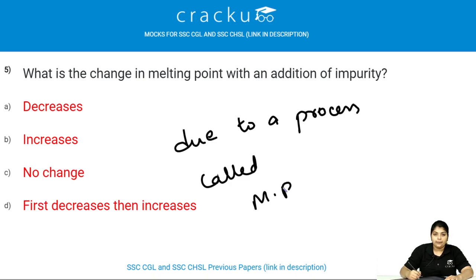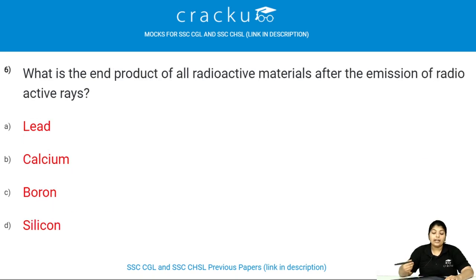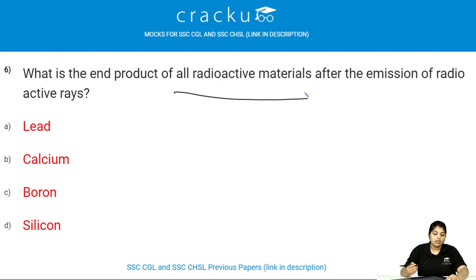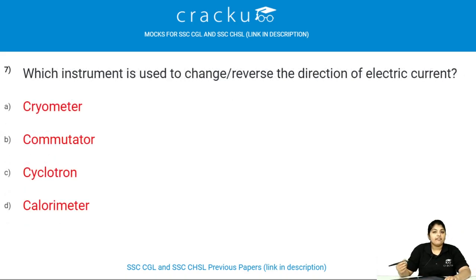What is the end product of all radioactive materials after the emission of radioactive rays? The end product of all radioactive materials after the emission of radioactive rays is lead. Which instrument is used to change or reverse the direction of electric current?